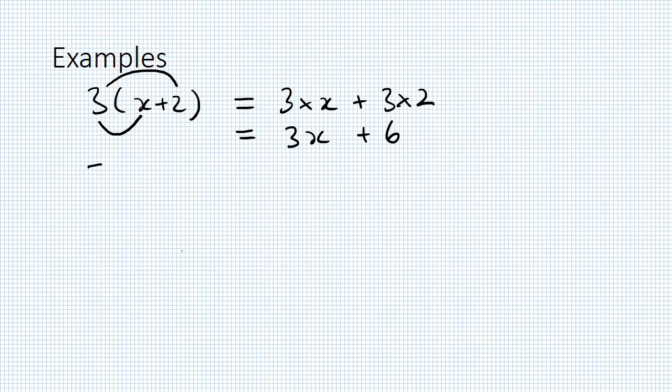Second example: we've got 5 times (x - 2). Multiply those two together, multiply those two together. What we've got to be careful with this time is the fact that we've got this negative here. So when we multiply that we get 5x subtract 5 times 2, which is 10.